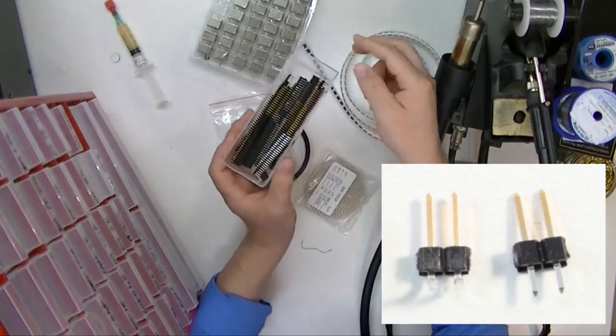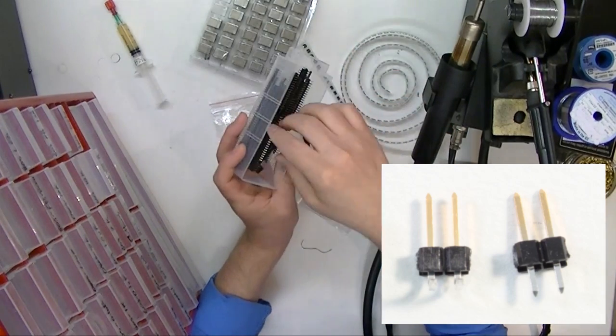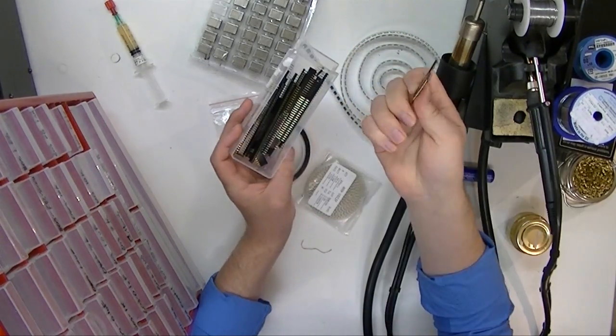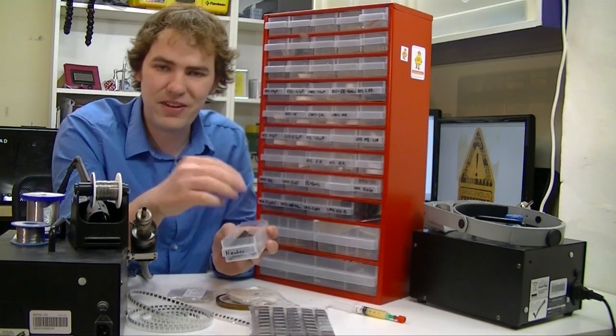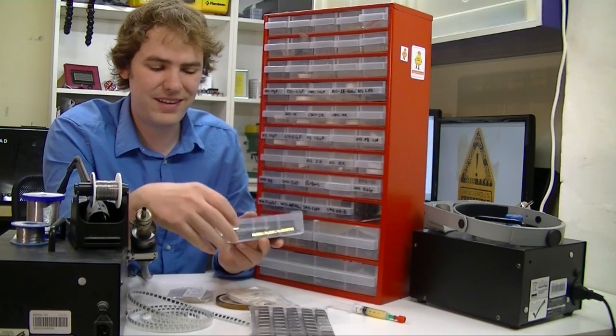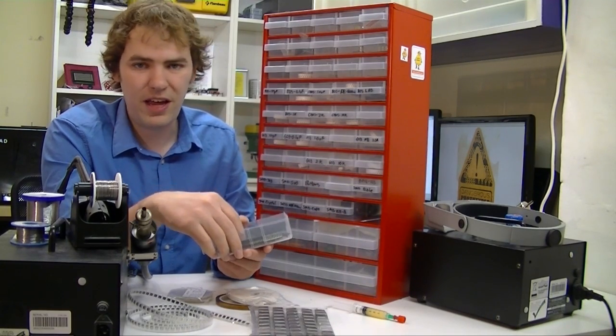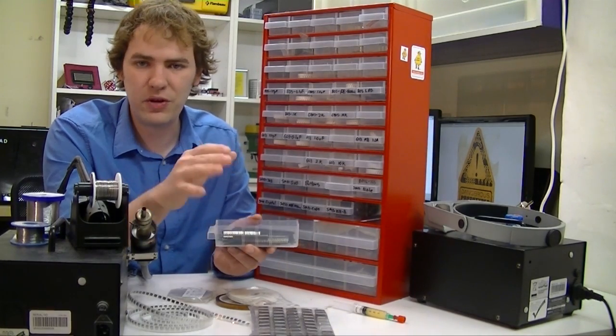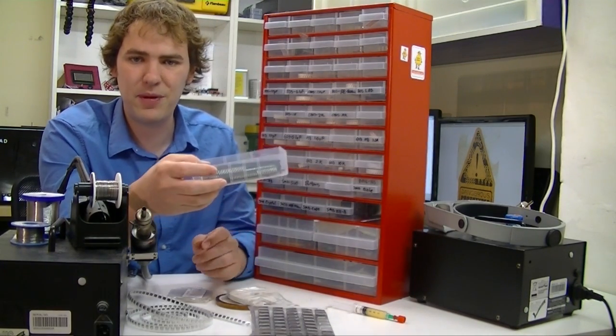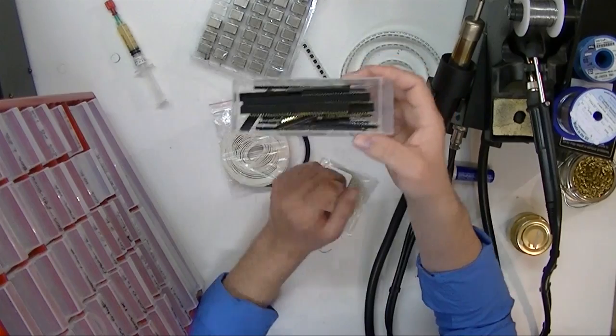And then in the last mini drawer, we've got header. This is all sorts of headers. Double header, single header, male, female, right angle and straight. You can never have enough header. We use it for usually programming stuff. And also, we'll use double header as a substitute for actual shrouded headers. Because we don't stock a whole lot of shrouded headers in the workshop. They can be odd sizes. And you just never have the right value on hand.